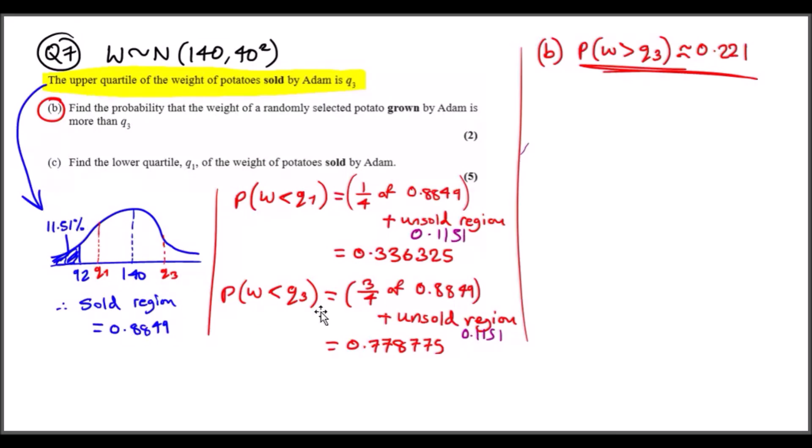So three quarters of 0.8849. The reason why I added the unsold region is because if you don't do that, you're going to end up having the quartiles in the wrong place. This will cause a shift to the right, so if you add this, you'll move it correctly to where it should be. You can do the same for Q1 because in part c they want us to find the first quarter or lower quarter of the sold as well. It's the same thing: find one quarter of the sold region and add it to the shift of the unsold to put it in the right place.